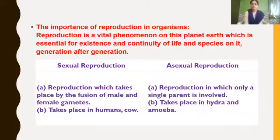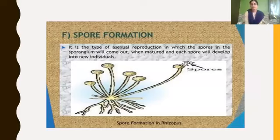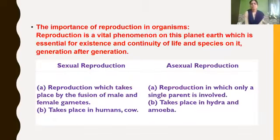Among all these types of asexual reproduction, in this chapter we are going to learn only about asexual reproduction in animals — that is, binary fission and budding — in a detailed manner. Reproduction is a vital phenomenon on this planet Earth. It is essential for the existence and continuity of life and species, generation after generation.